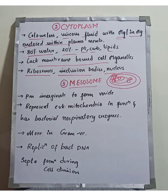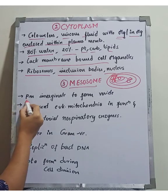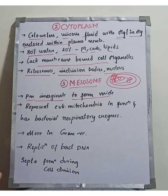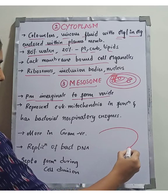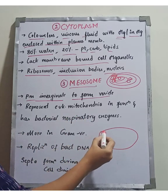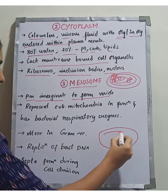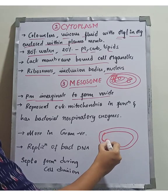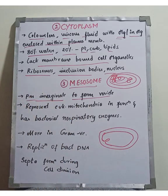Next is the mesosome. The mesosome is formed when the plasma membrane invaginates to form vesicles. In the bacterial cell, this cell membrane invaginates to form a structure called the mesosome.